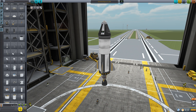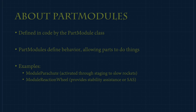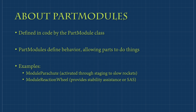Parts don't do much on their own. Without at least one part module, a part is dead weight. While parts define the information and status of a part, part modules define their behavior — they're what make an engine fire, or allow us to run experiments. Part modules can cause parts to do things, and the possibilities are endless when modding is involved. These modules range from the standard parachute, activated through staging to slow a rocket's descent, to the SAS modules, which consume electricity to stabilize rockets in flight.